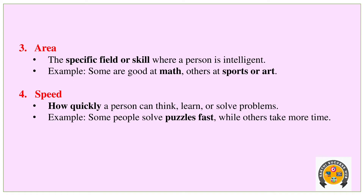Next is Area — the specific field or skill where a person is intelligent. For example, some people are good at maths while others are good at sports. This is the specific field or skill in which a person demonstrates intelligence.